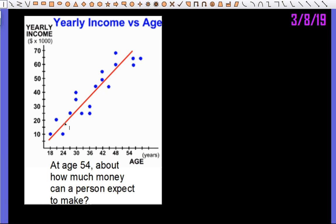This has obviously a positive correlation, meaning the slope of the line of best fit is positive. So that means as X increases, as our age increases, our Y increases.